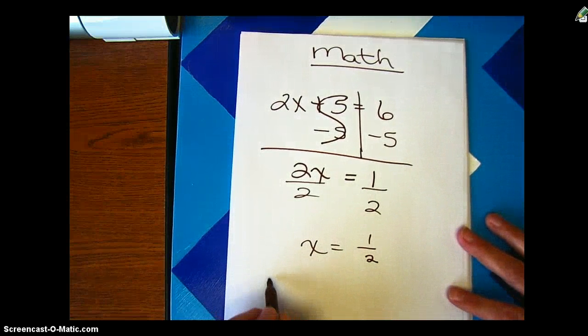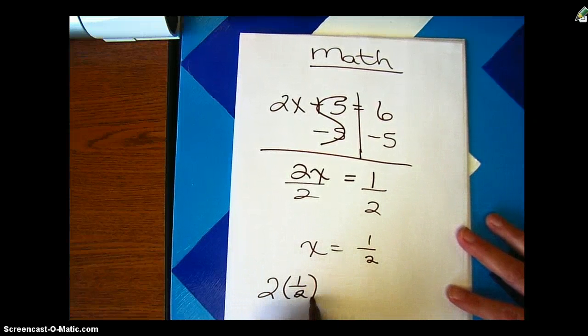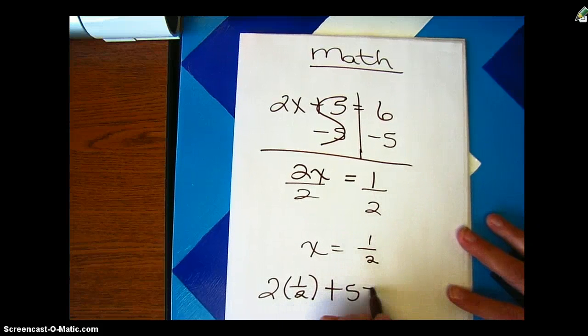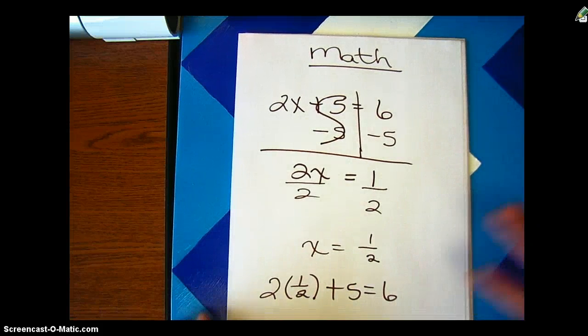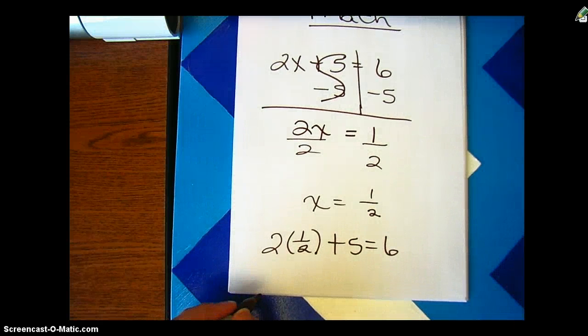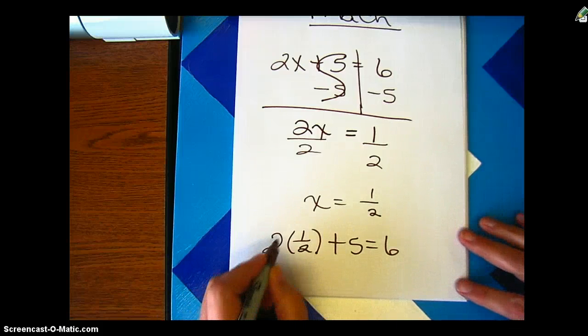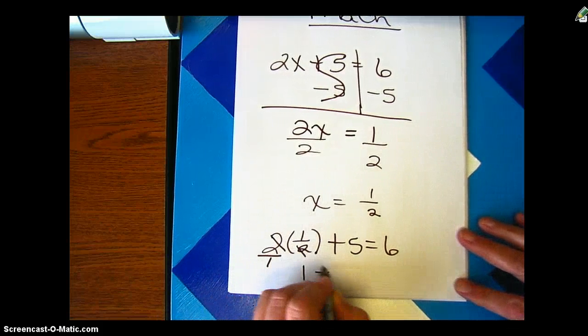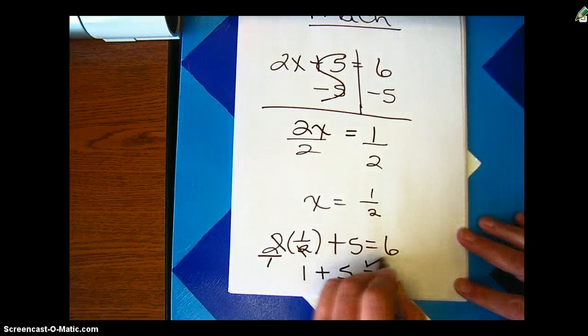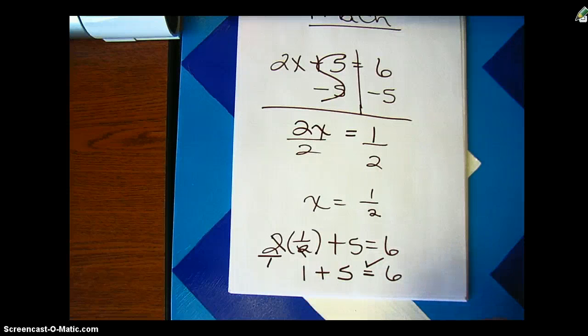And check my work. Because I know all students check their work, and y'all know that is true if you are a math teacher, because you've told them 950,000 times to do that. So you put it over 1, so you have 1 plus 5, and yes, that does equal 6. So therefore I know I have the correct answer.